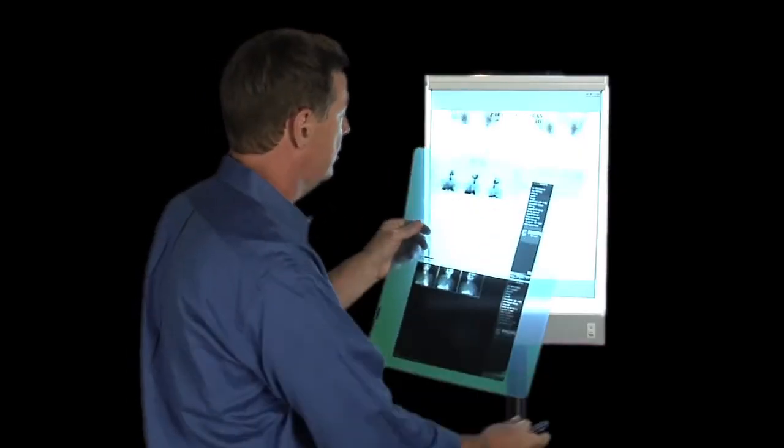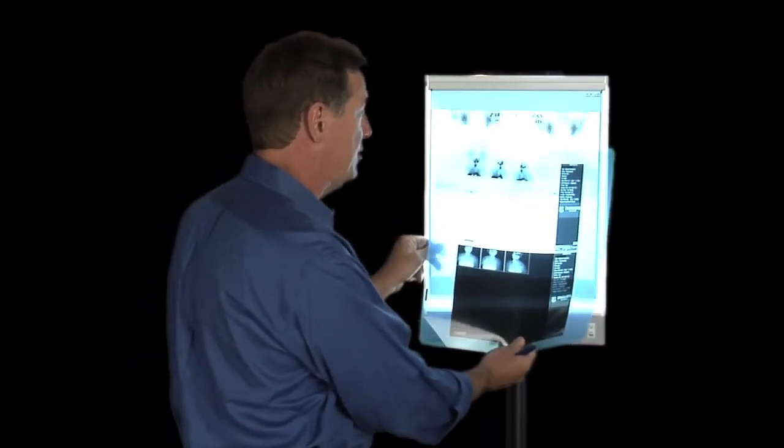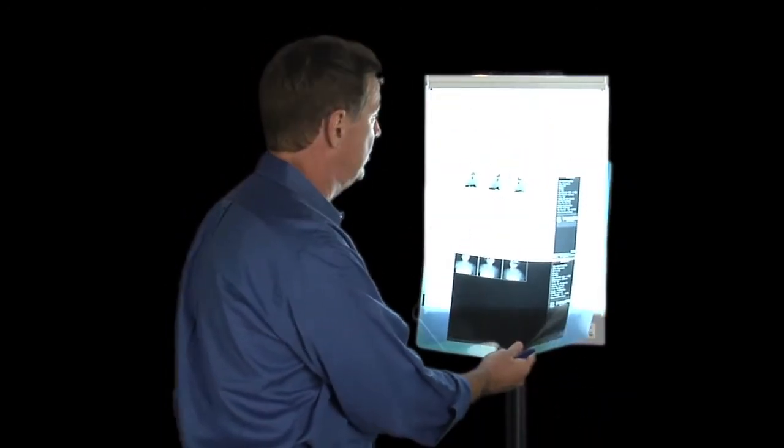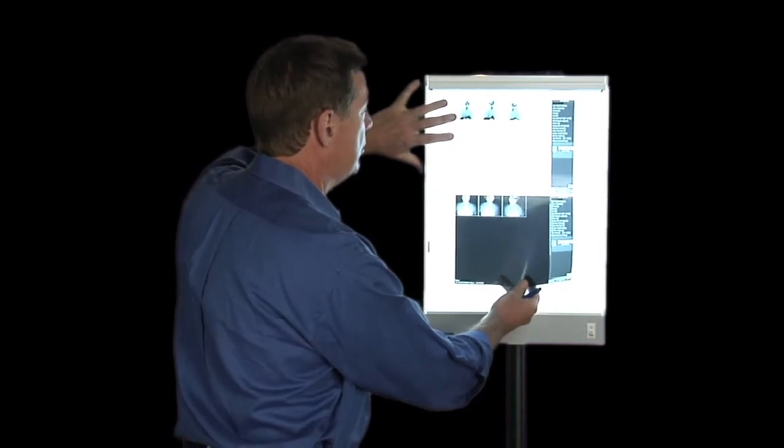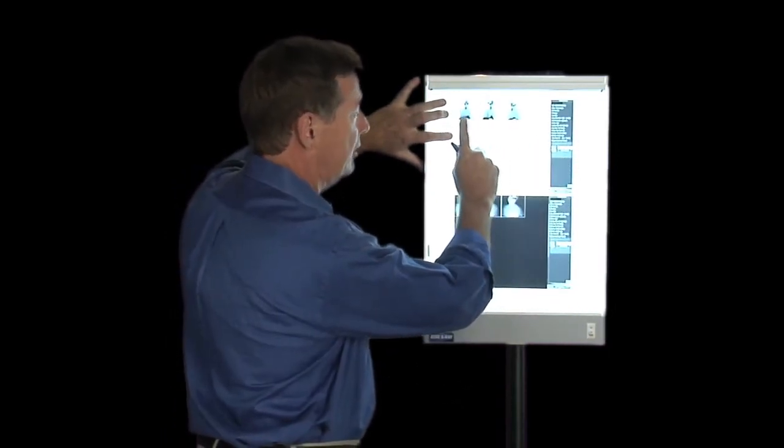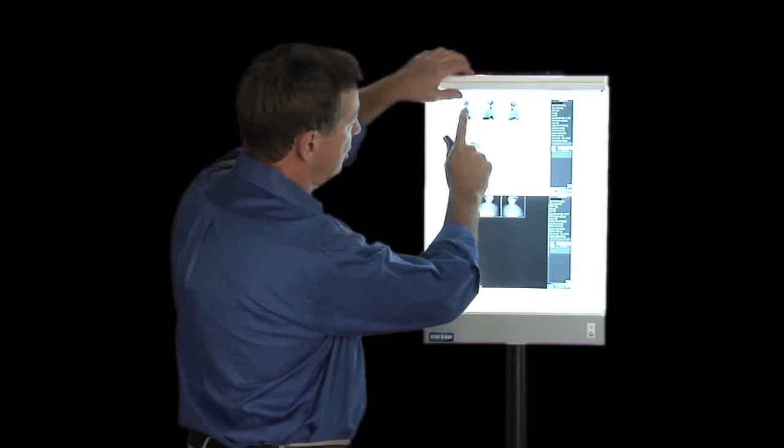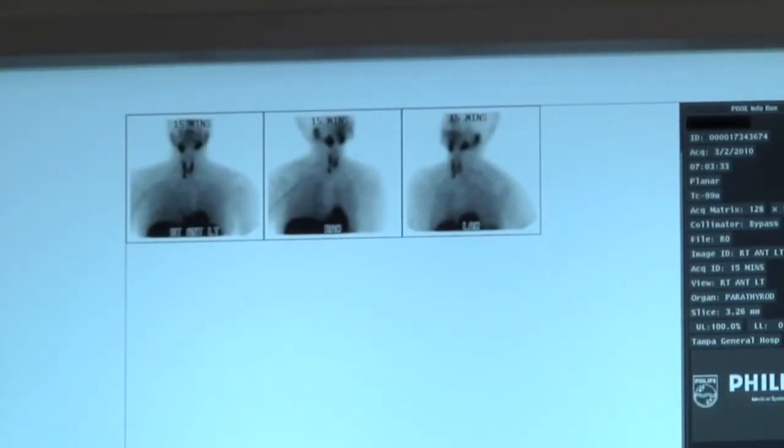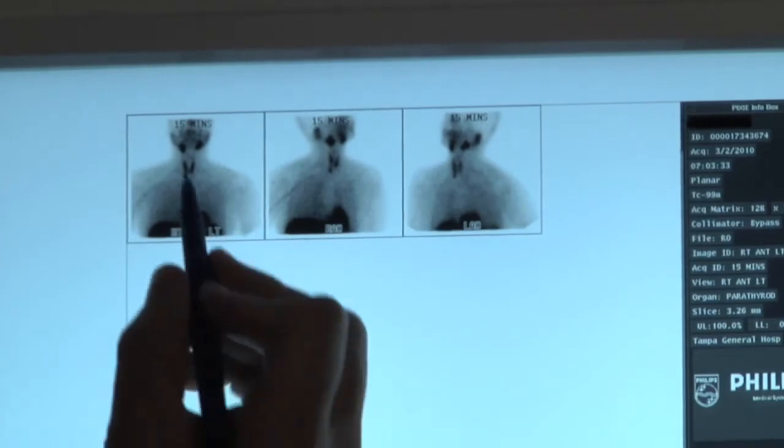That same patient has the Sestamibi scan done by us, by our team. Of course, we do several thousand of these a year. That same scan, that same patient, look how clean and crisp it is. Look how in focus it is. You clearly see the salivary glands, the butterflies, the thyroid, and the parathyroid tumor.